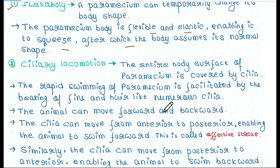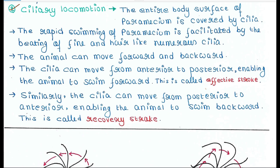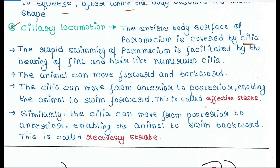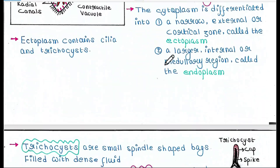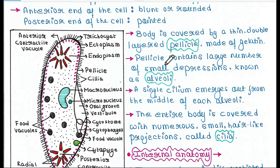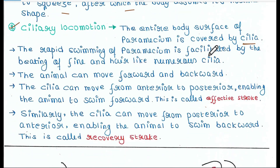Next is ciliary motion. The entire body surface of paramecium is covered by cilia. In our last lecture we have seen that the entire body has cilia-like structures. The rapid swimming of paramecium is facilitated by the beating of those cilia — beating means just like sweeping.